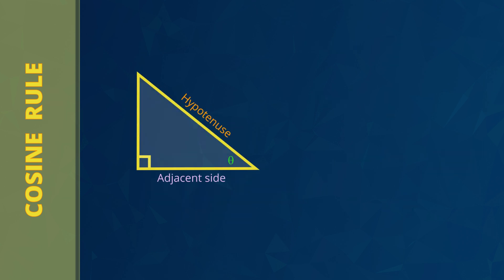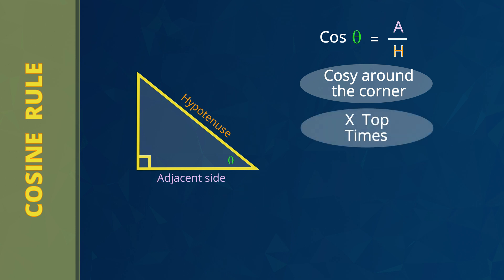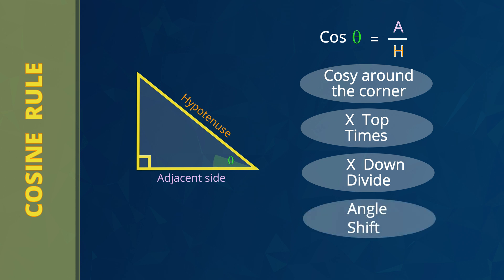Now let's summarize the main points of the cos rule. The cos rule is: cos theta equals a divided by h. It's easy to spot a triangle where the cos rule will be used because the important parts of the cos rule are all cozy around the corner. In a question where X is on the top of the fraction, you times in the next line — T for top, T for times. In a question when X is down on the bottom of the fraction, you divide in the next line — D for down, D for divide. When you want to find the angle, you work in reverse by pressing shift on the calculator.